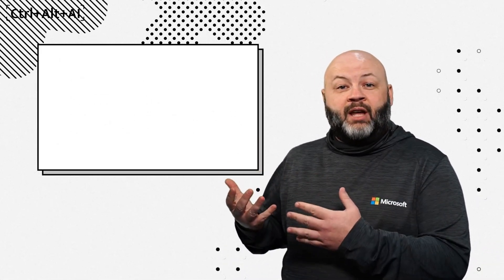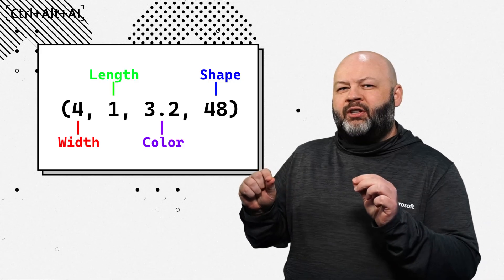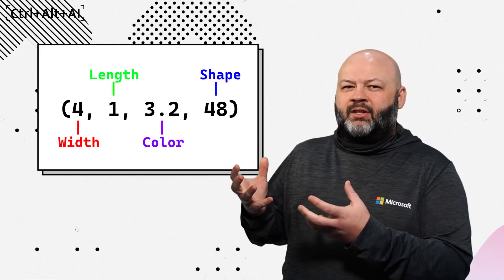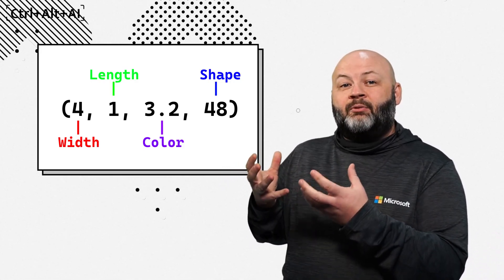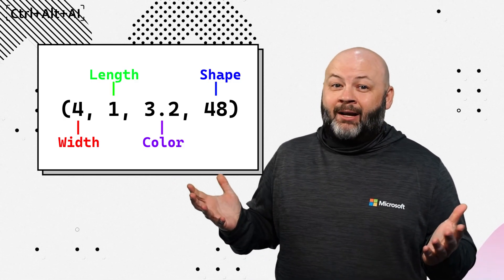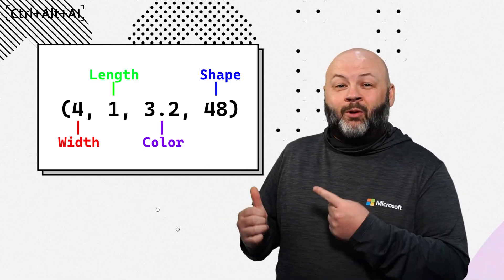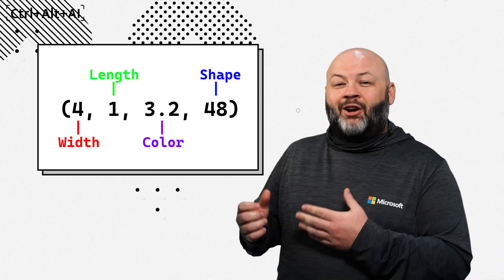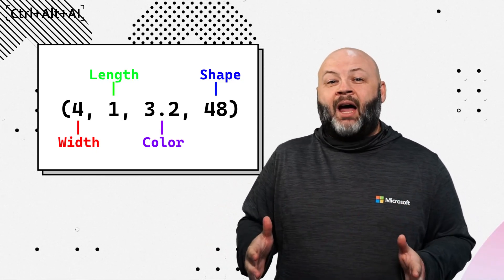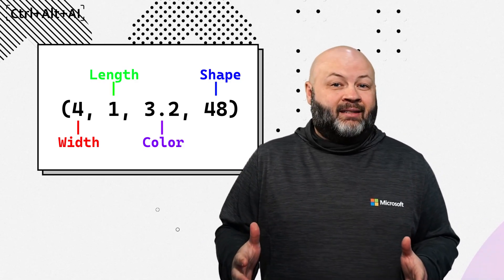But that's exactly where a vector database shines. It's going to store those data points as vectors rather than the actual feature data, so that the similarities in those objects are more easily recognizable. Now, before we move on, we need to discuss two other topics that are foundational to vector databases: vectors and embeddings.